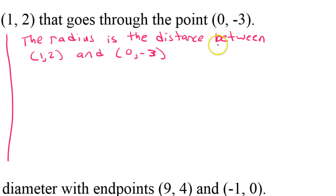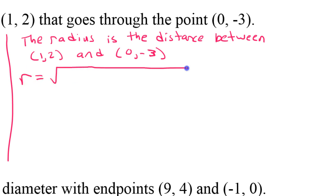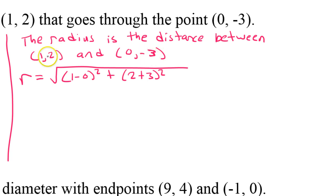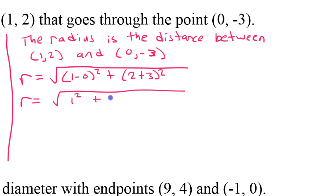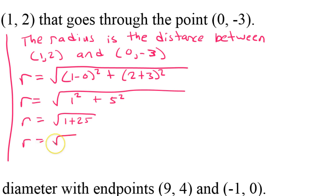So as we discussed, the radius should be the distance between the center and this point on the circle. I can find the radius by using the distance formula, which tells me x minus x. So I'm going to do (1 - 0)² and then y minus y, so that's going to be (2 - (-3))², which is (2 + 3)². So 1 minus 0 is just 1, so that's 1² + 5². The radius is going to be the square root of 1 plus 25, so the radius is going to be the square root of 26.